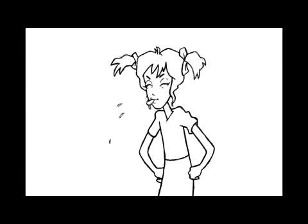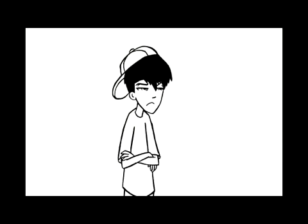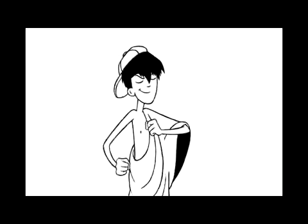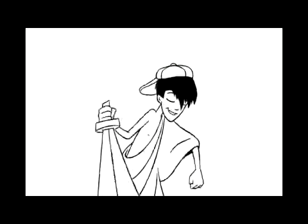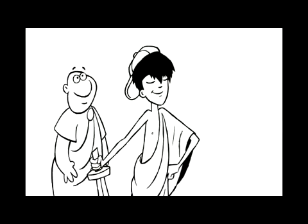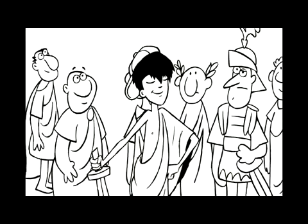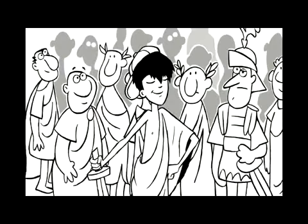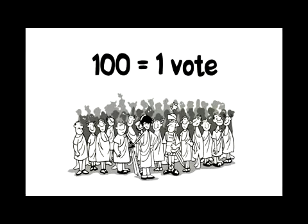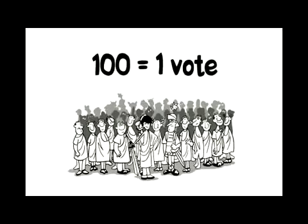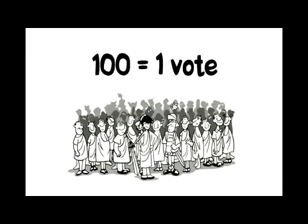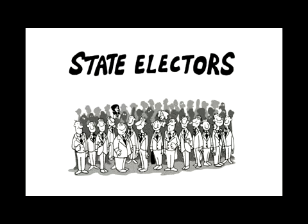They found the solution in ancient Rome. Romans didn't want the rich to have too much power, so they divided their male citizens into groups of 100, and each group received only one vote. This system was called the centurial assembly. It was this ideal of fair representation that our founding fathers used to create the Electoral College system in the United States.